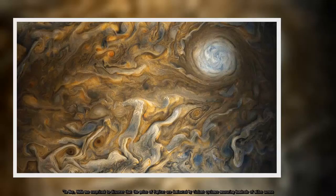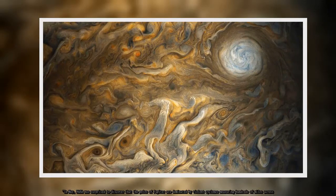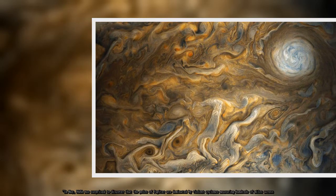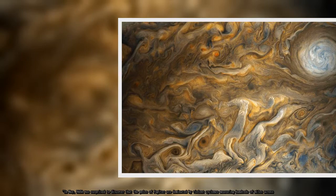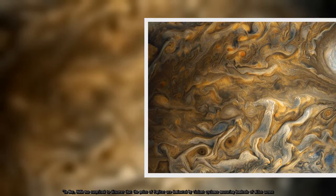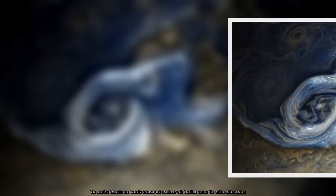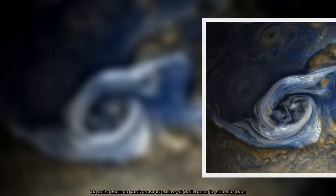In May, NASA was surprised to discover that the poles of Jupiter are dominated by violent cyclones measuring hundreds of miles across. The massive tempests are densely grouped and seemingly rubbed together across the entire polar region.